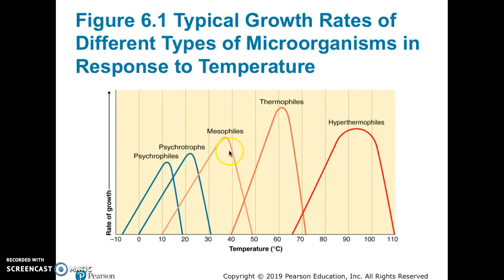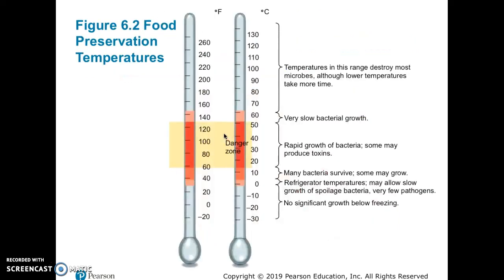The mesophiles are the group most relevant to human disease. They can survive a bit warmer or cooler than the human body and are most commonly found in nature — living inside or on organisms or in soil. When it gets very cold they may die or go dormant, but at their optimum — warm-blooded mammal temperature — they grow quickly.